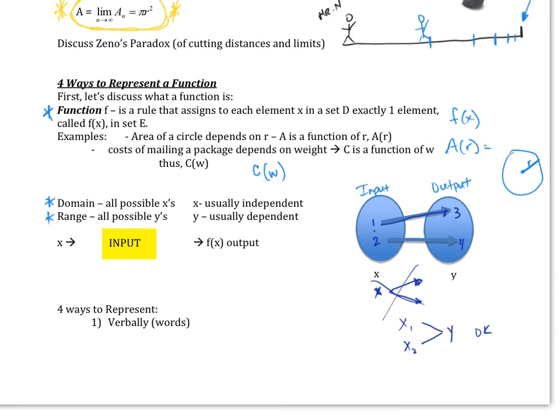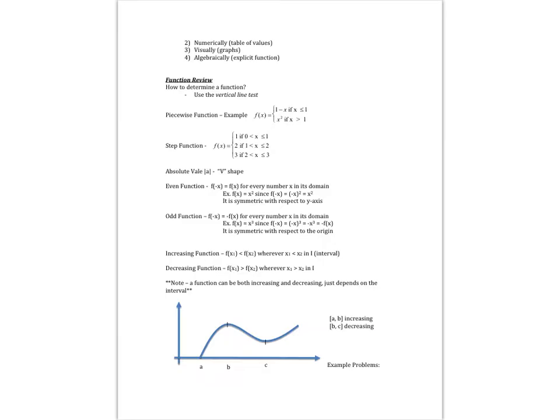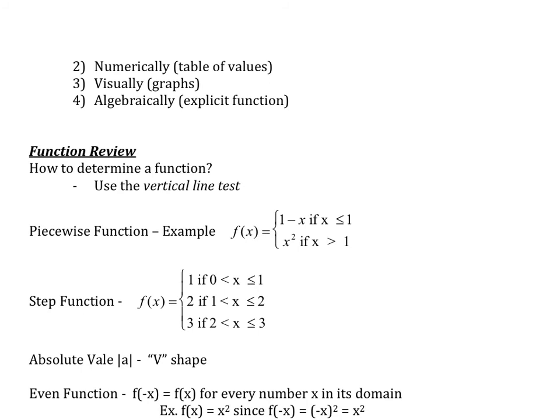Now, we have four ways to represent a function. We could do it verbally with words. And we could do it numerically with a table of values. We could do it visually with graphs. So numerically would be our table of values that we have for x and y. Visually would be the graphs. And algebraically would be with some sort of explicit function.